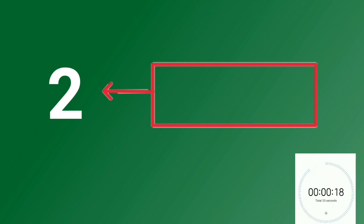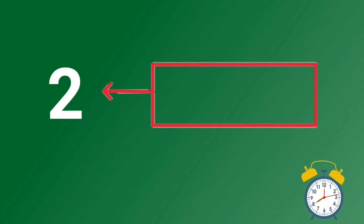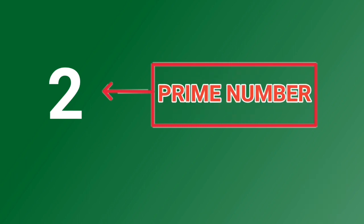Is number 2 a prime number or a composite number? Number 2 has two factors. Therefore, it is a prime number.